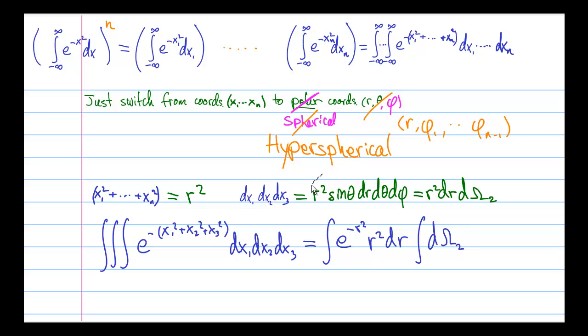But now we have to be slightly more careful about how we treat the volume elements. So before, in three dimensions, we just said that dx1, dx2, dx3 is equal to this radial part times the angular part that we denoted by omega.